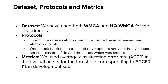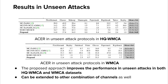For the evaluations, we have used both WMCA and HQ-WMCA datasets. For the protocols, to emulate unseen attacks, we created several leave-one-out attack protocols. One attack type is left out in the train and development set, and the evaluation set contains bona fide and the attack type which was left out. For comparison, we use the average classification error rate in the evaluation set, for the threshold computed at BPCER 1% in the development set. This table shows the ACR in the leave-one-attack-type-out protocols of both datasets. In both datasets, it can be seen that the proposed architecture itself improves the performance slightly, and with the addition of the CMFL loss, the proposed method achieves much better performance compared to other baselines.